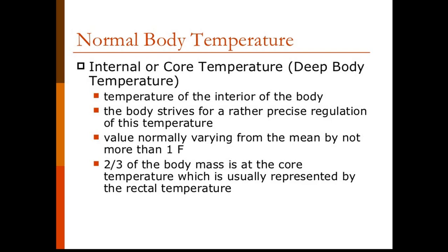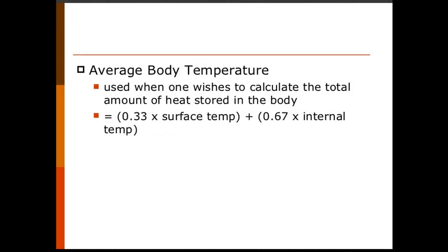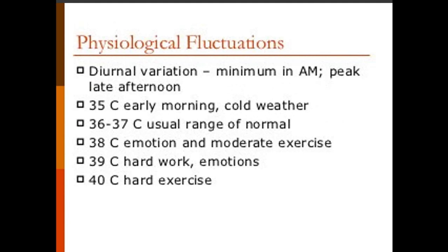The normal inner core temperature — the deep body temperature — is what the body strives to maintain precisely. The core temperature value varies from the mean by not more than one degree Fahrenheit. Two-thirds of the body mass is at the core temperature, which is usually represented by the rectal temperature. Surface temperature is different — it is variable according to the environment and represents approximately one-third of body mass, the skin.